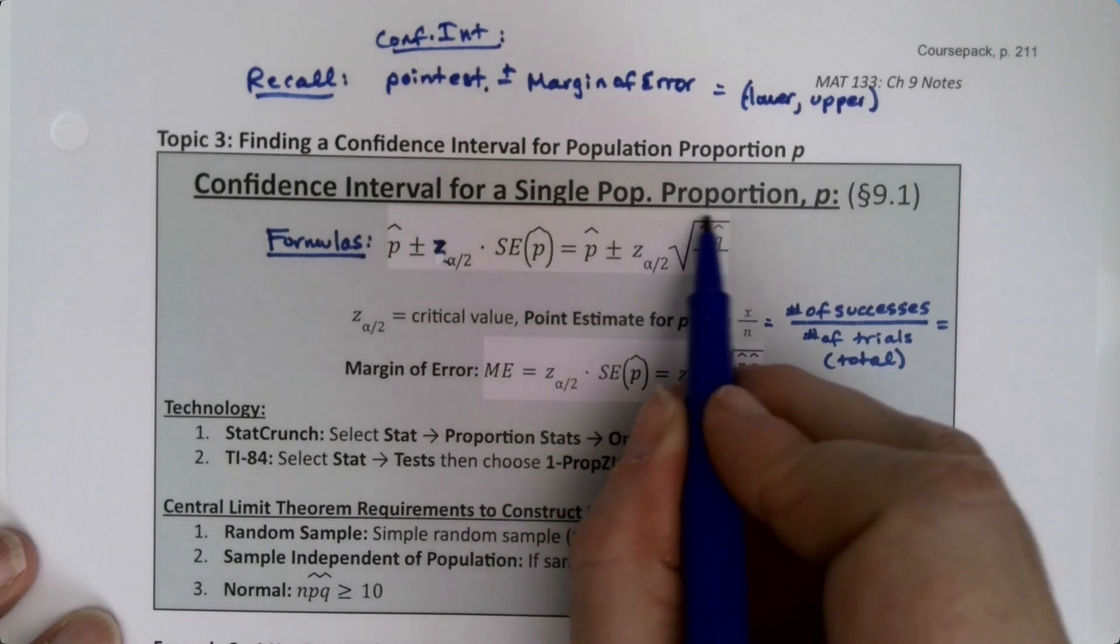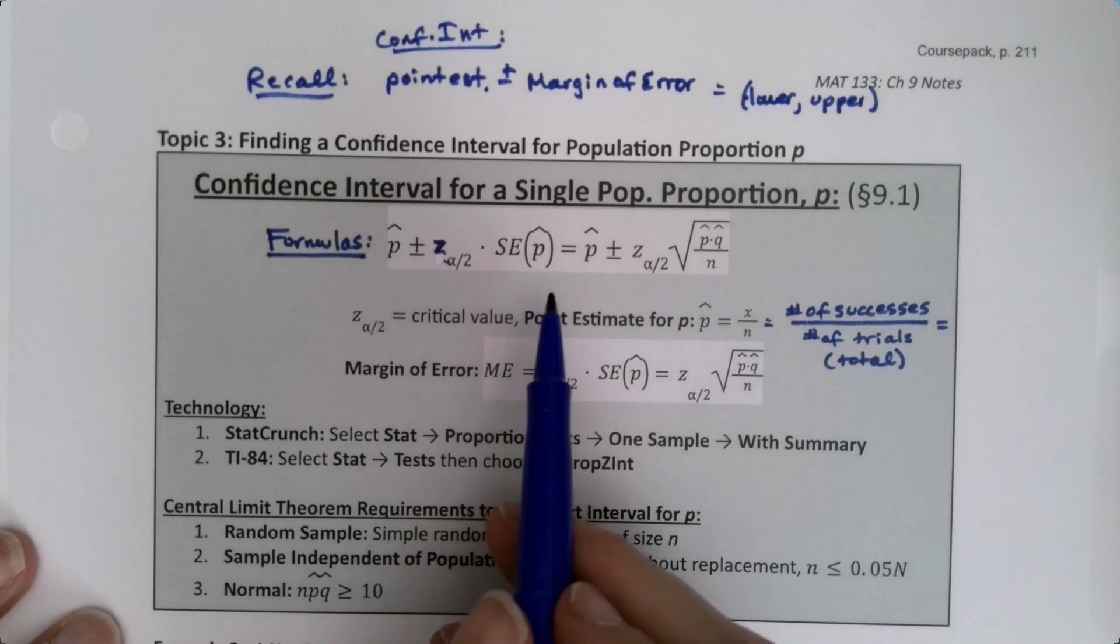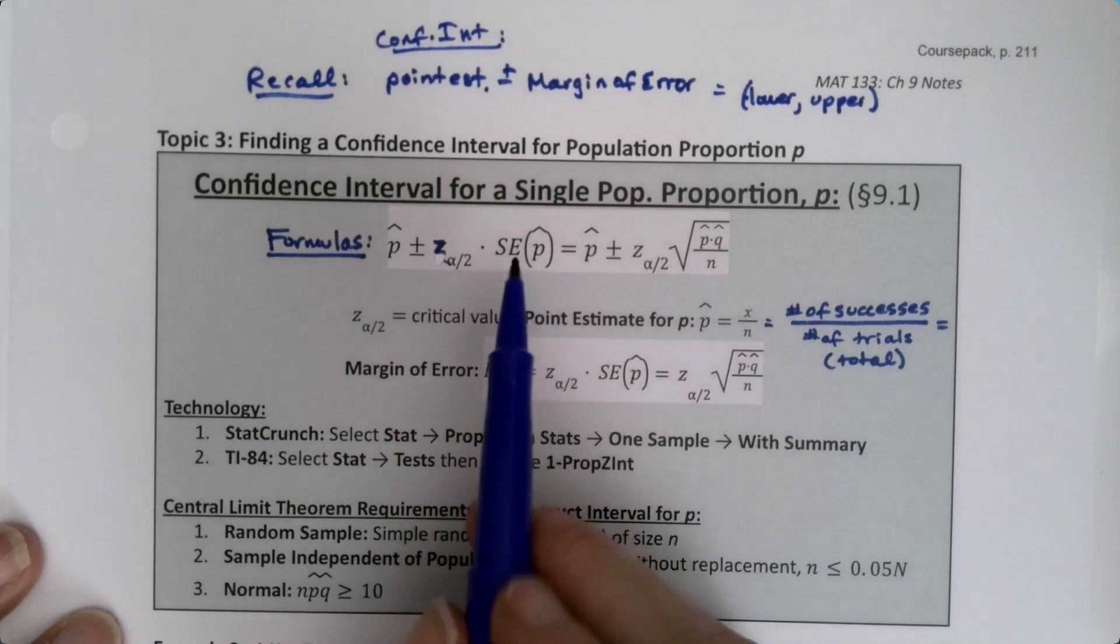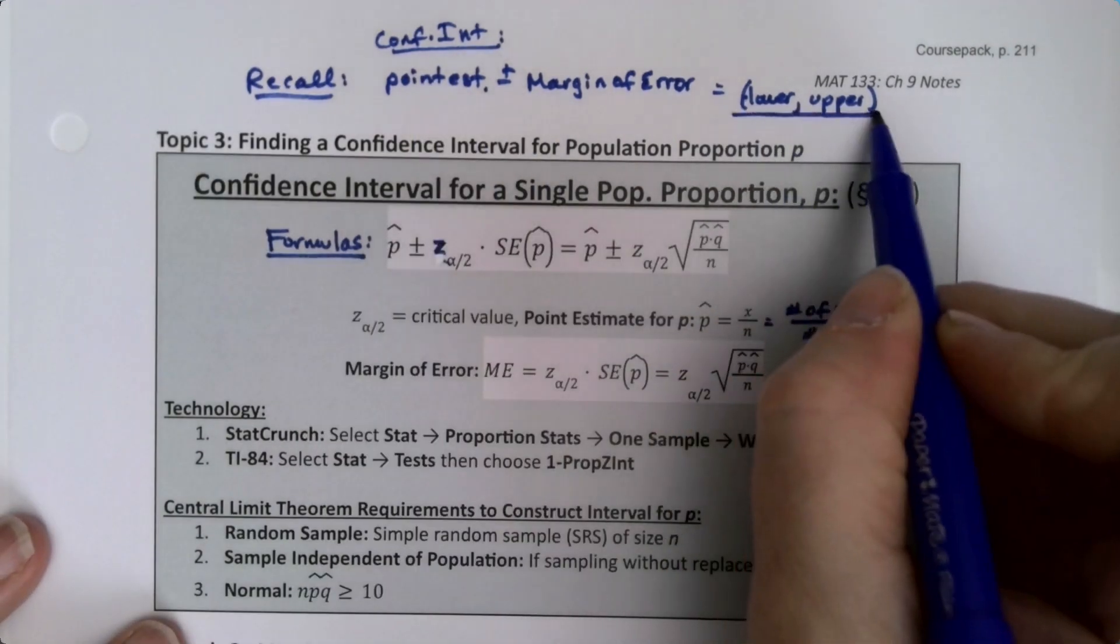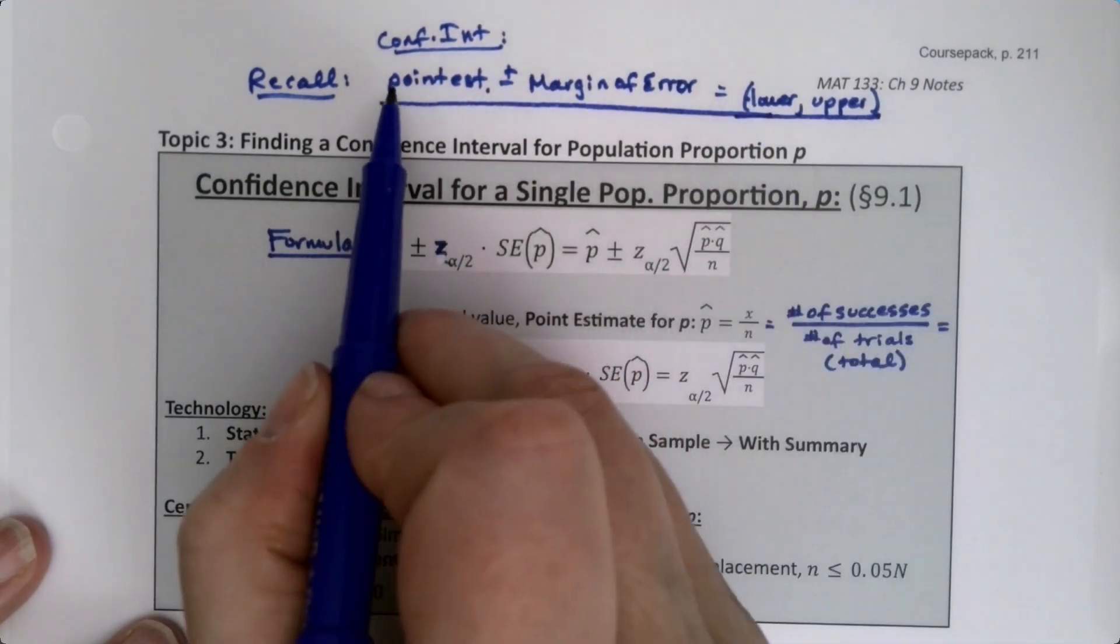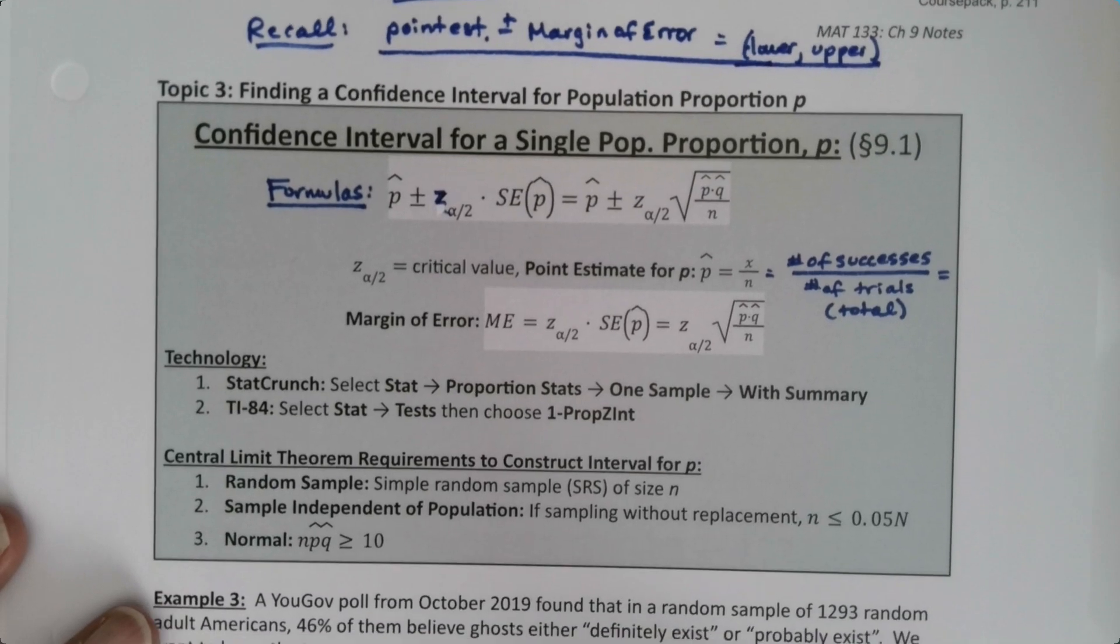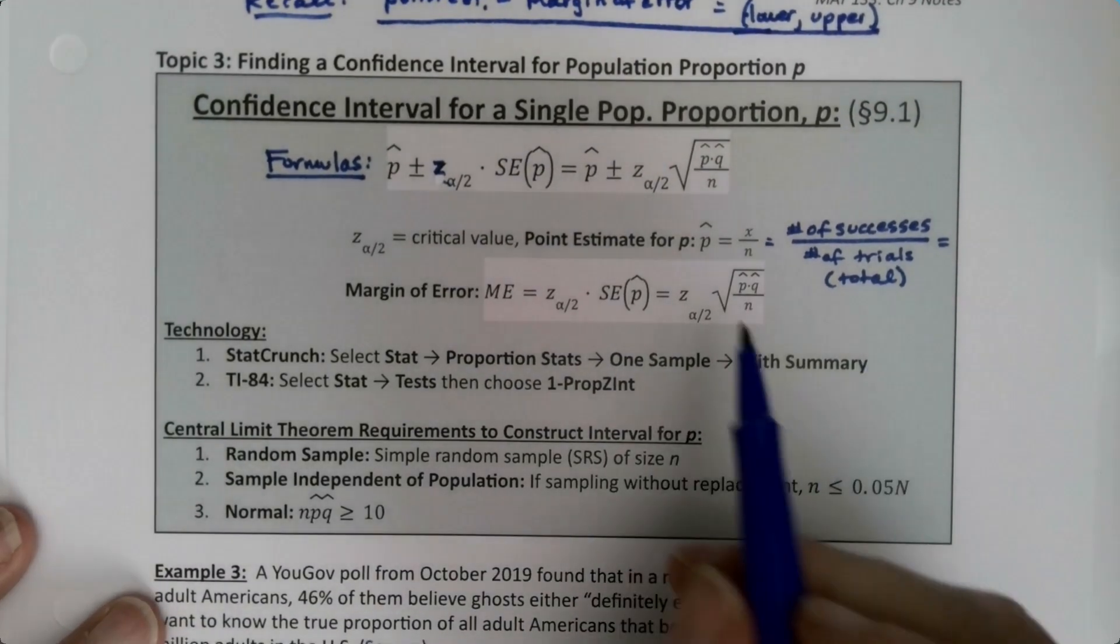Point estimate is right there plus or minus margin of error. Both are perfectly valid formulas, they mean the same thing. The standard error is this bit with the square root, so either way works. This is the basic formula for a confidence interval. Confidence intervals always do this, at least for the ones we're doing now.